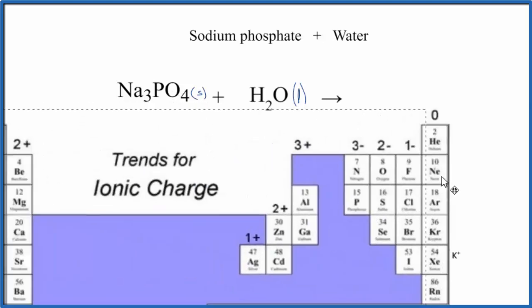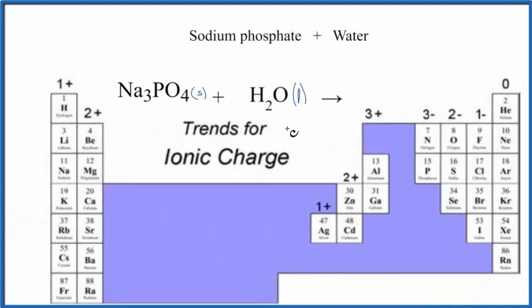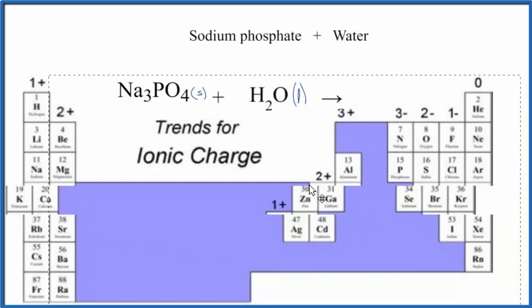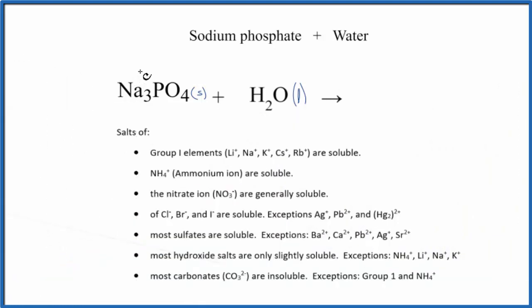Let's look at the periodic table here and see what the charge on the sodium ion is. So here's sodium. It's in group one. So it's going to have a one plus ionic charge. So write a little one plus above it here. So we have three of them. The phosphate ion, this is one you need to remember. The whole thing has an ionic charge of three minus.